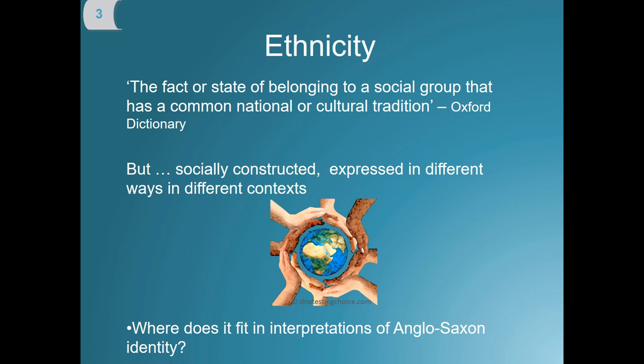Ethnicity can be considered a controversial term, especially within the Anglo-Saxon period. I followed this broad definition, but please bear in mind this is broad — it does not encapsulate the complexity of ethnicity, and in my opinion it's very much context-specific. It depends on the unique context in which you're looking. So I want to explore how ethnicity and its complexities fit into Anglo-Saxon identity.